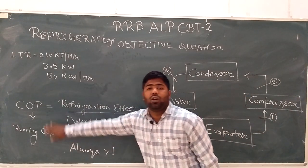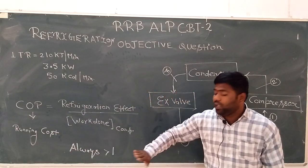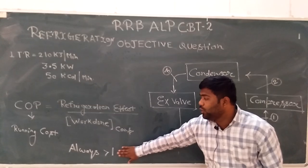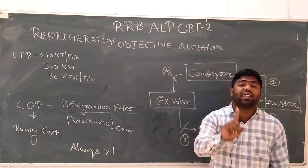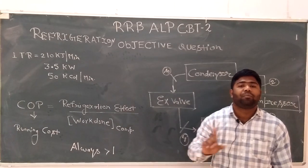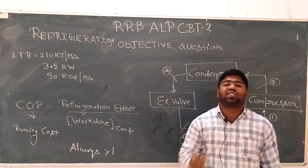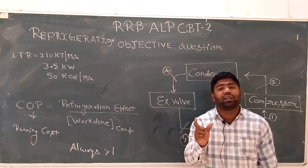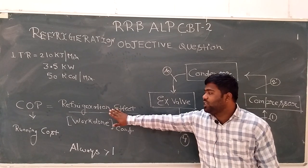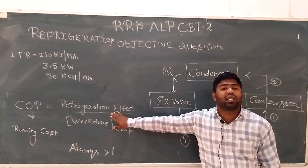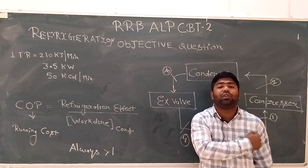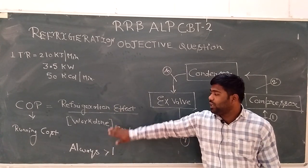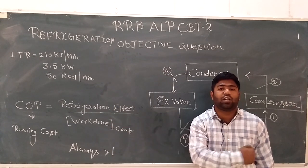COP will always be greater than 1. So COP's definition is: Refrigeration Effect divided by Work Done. Refrigeration Effect is produced by the evaporator, and Work Done is by the compressor.